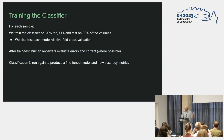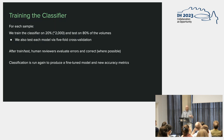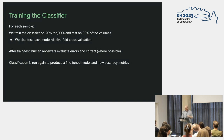We did an 80/20 train/test split of each 10,000-volume set. We also did five-fold cross-validation — you'll see later some mean F1 scores to try to prevent overfitting. After each run for each sample, human reviewers evaluate the errors and correct those that are possible, then we rerun it. Essentially, we have a fine-tuned model that we then deploy to see how it improves.